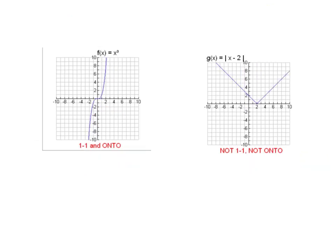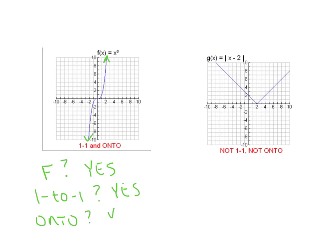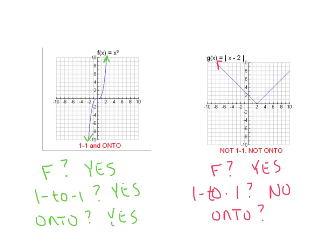A little more practice. For the x³ graph on the left: does it pass the vertical line test? Yes — it's a function. Does it pass the horizontal line test? Yes — it's one-to-one. Does it extend infinitely high and infinitely low? Yes — so it is onto. We've got a yes to all three. For the graph on the right: it passes the vertical line test, so it's a function. Does it pass the horizontal line test? No. Does it extend infinitely high and low? It extends infinitely high on both edges but never goes below y = 0, so no — it is not onto.